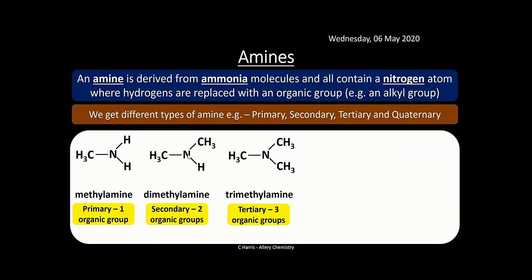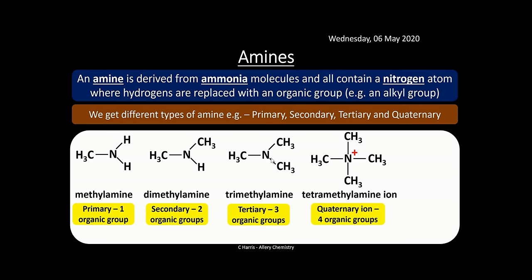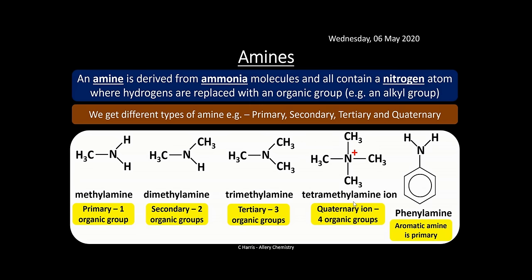A tertiary amine, trimethylamine, has three methyl groups attached to the nitrogen. Then we have quaternary amines — for example tetramethylammonium ion — which has a positive charge because nitrogen forms a coordinate bond to accommodate four organic groups surrounding it. We also get aromatic amines, which are primary amines — for example phenylamine. There is a video on benzene in the year two playlist if you are unsure about aromatics.